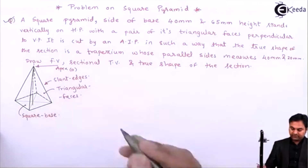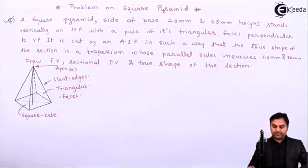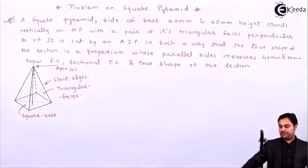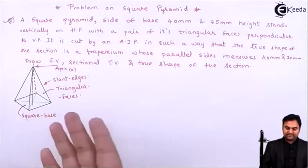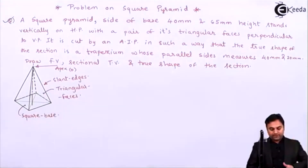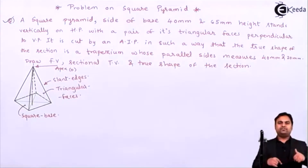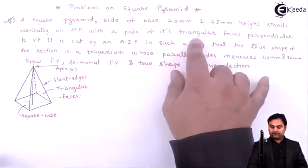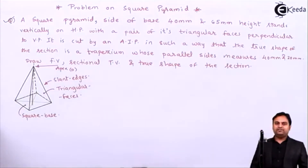Reading the question: the square pyramid with side of base 40 mm and 65 mm height stands vertically on HP, meaning it is kept as drawn in the diagram. We assume this is an HP or ground where the pyramid is kept. When looking from top, we see the square base. The condition is that a pair of its triangular faces must be perpendicular to VP. Let us get started with the solution.